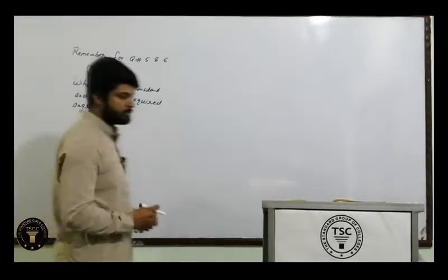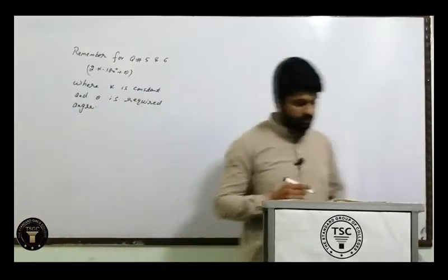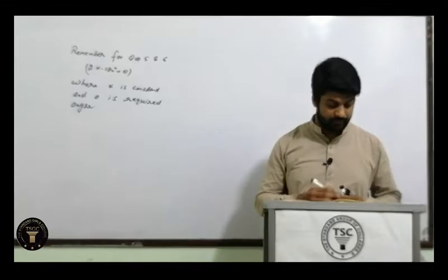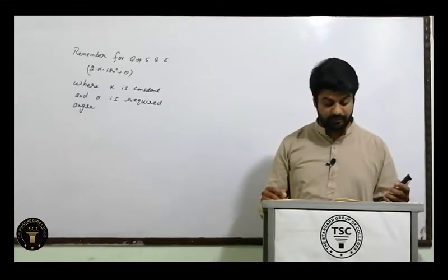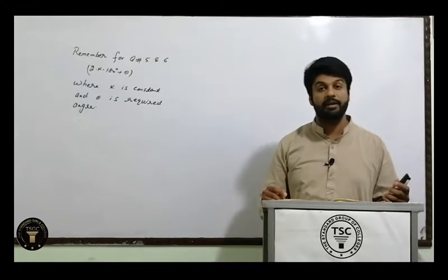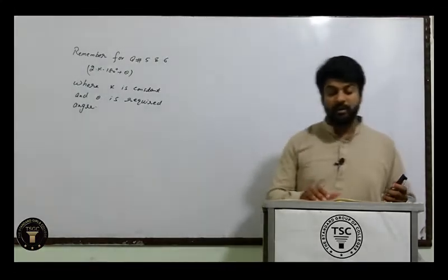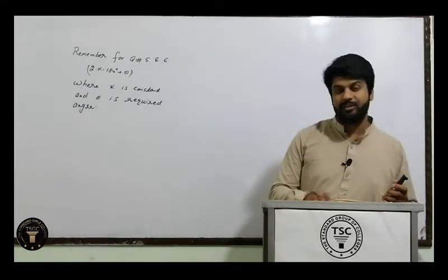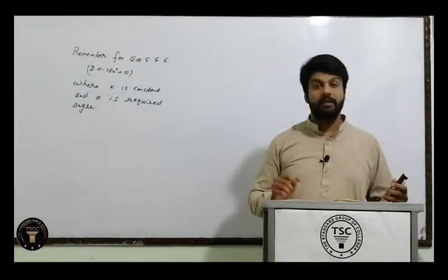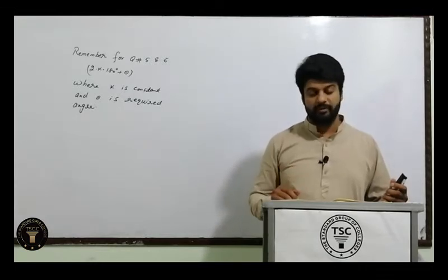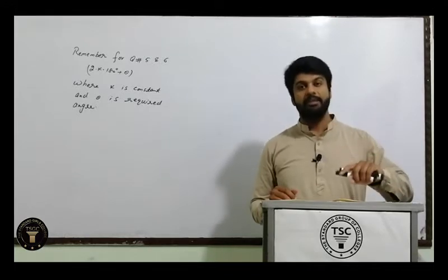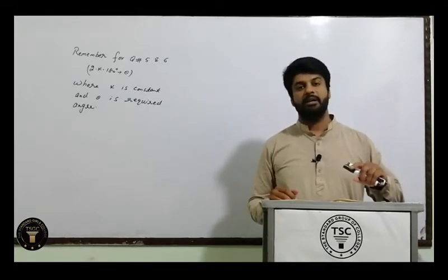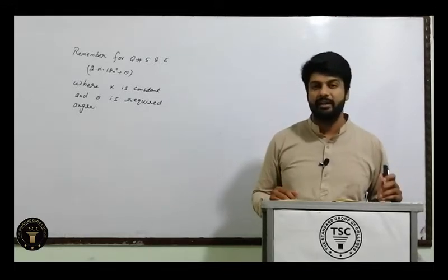Remember for question number 5 and 6. Let's start question number 5: find the values of trigonometric functions of the following quadrantal angles. First of all, what are quadrantal angles? Angles which are multiples of a right angle — angles which are multiples of 90 degrees are known as quadrantal angles.